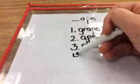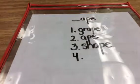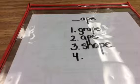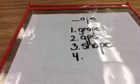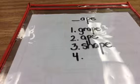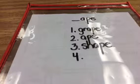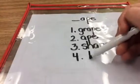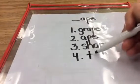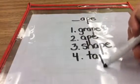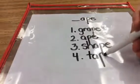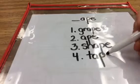Number 4, spell tape. You can use some tape to make a paper kite. T-ape. Tape.